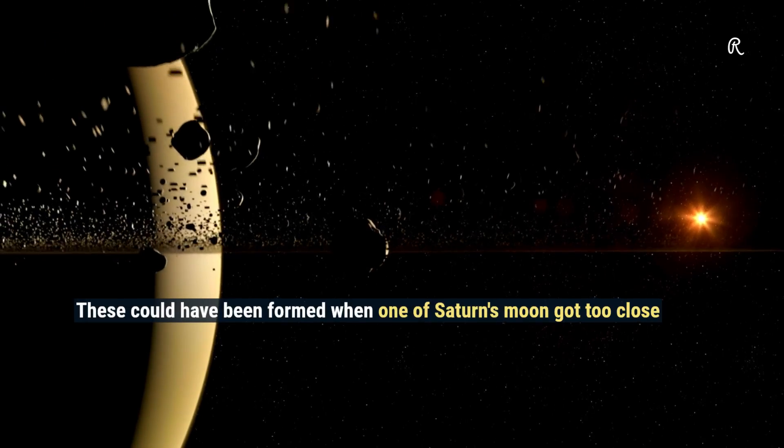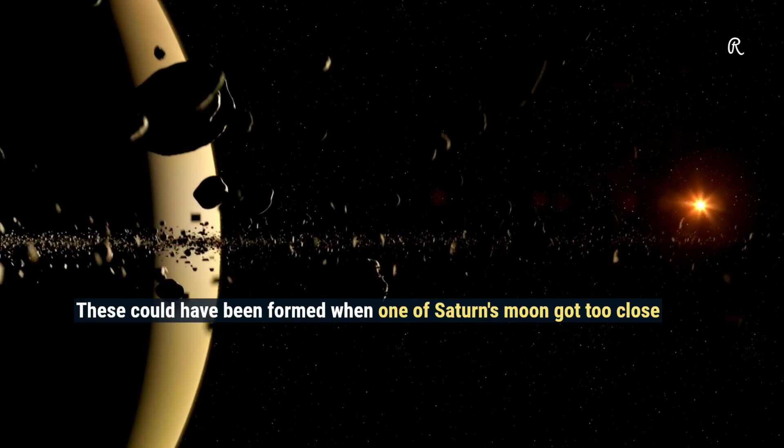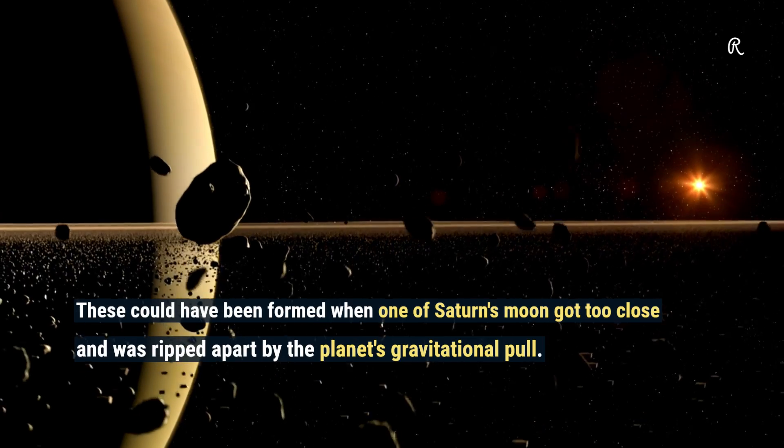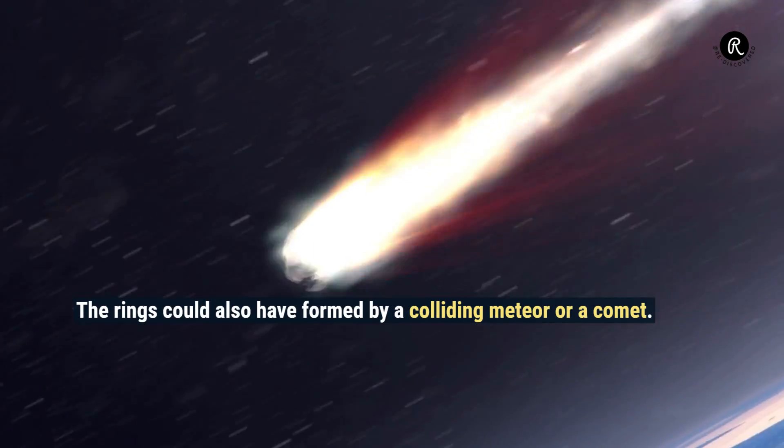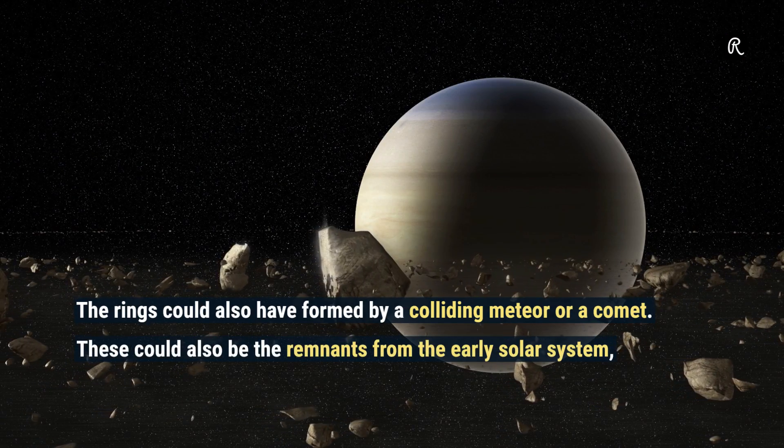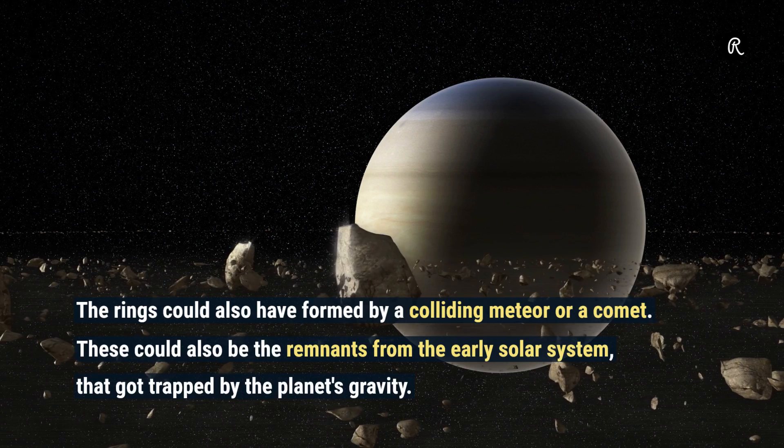These could have been formed when one of Saturn's moons got too close and was ripped apart by the planet's gravitational pull. The rings could also have formed by a colliding meteor or a comet. These could also be the remnants from the early solar system that got trapped by the planet's gravity.